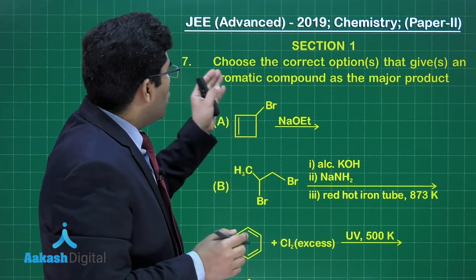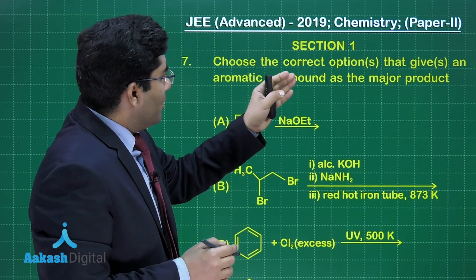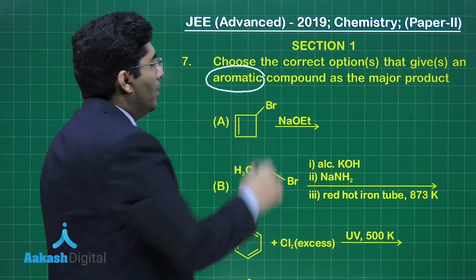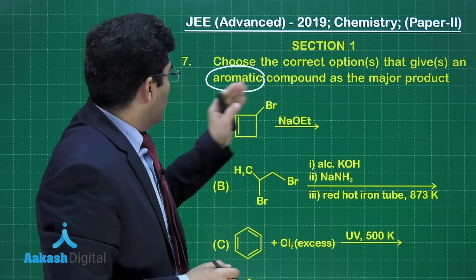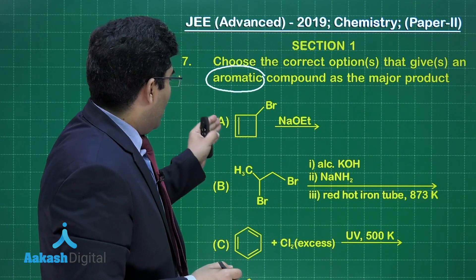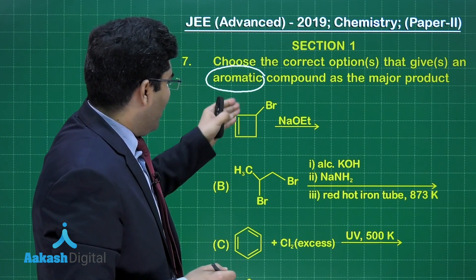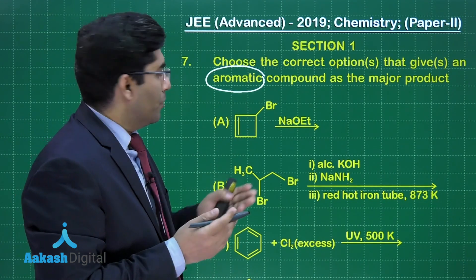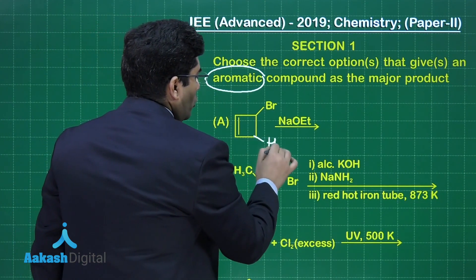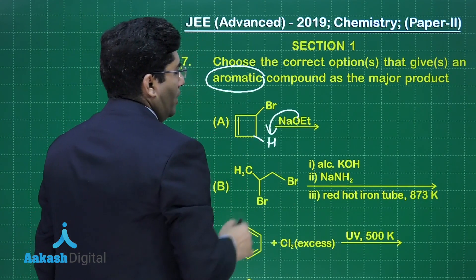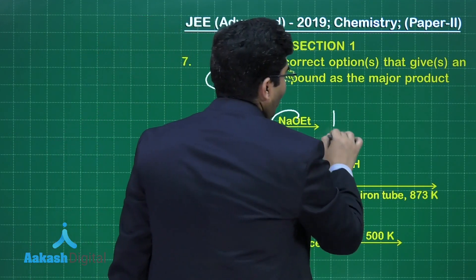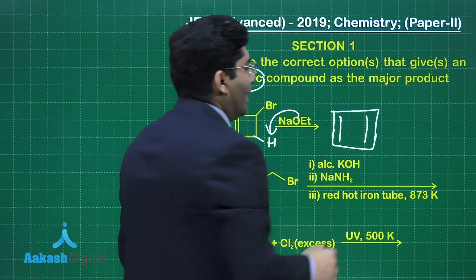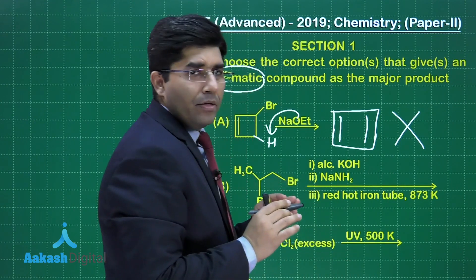Now in this question, choose the correct option that gives an aromatic compound. We have to get an aromatic compound after the reaction as the major product. The first one is cyclobutene with bromine attached, reacting with sodium ethoxide. Ethoxide ion is a very good base, so one can think that this ethoxide ion can proceed with the elimination reaction and cyclobutadiene is formed, but that is not correct because it's very unstable.